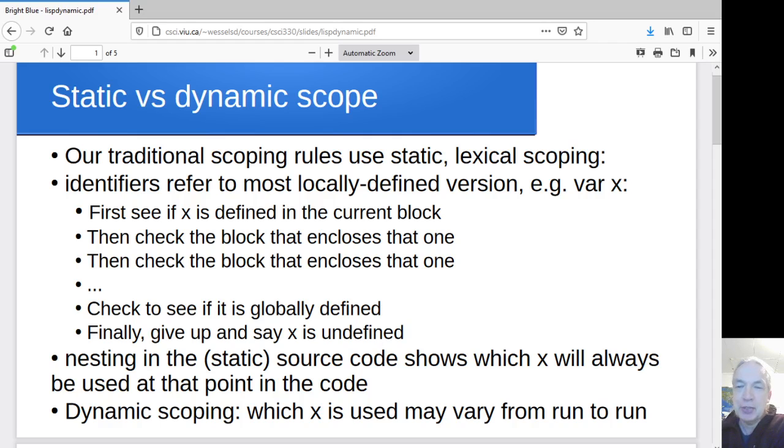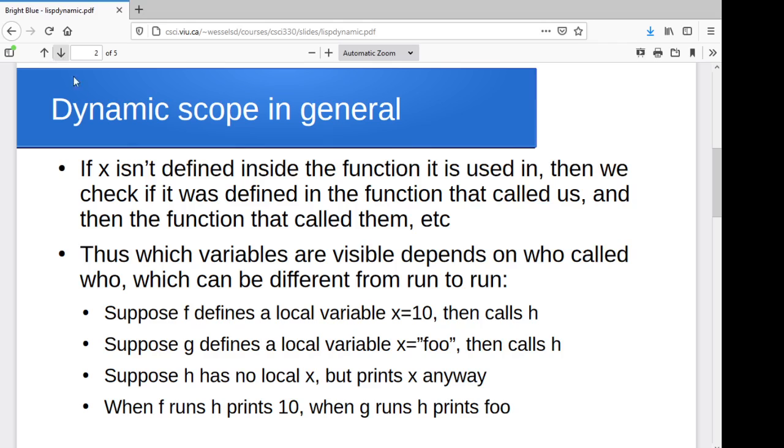In dynamic scoping, you can't necessarily tell that. Which version of a variable gets used can depend on the sequence of function calls that are made. So the way it works is like this.